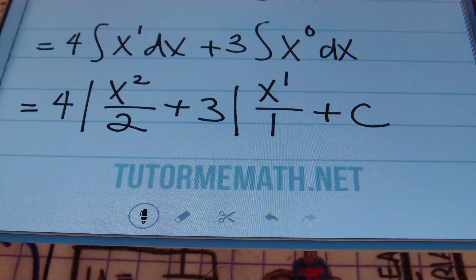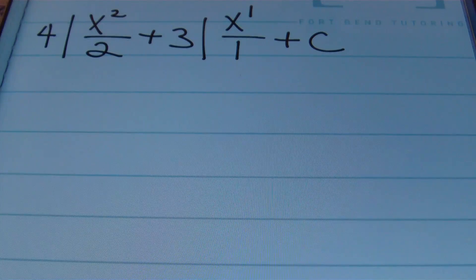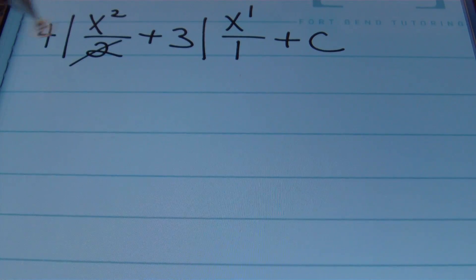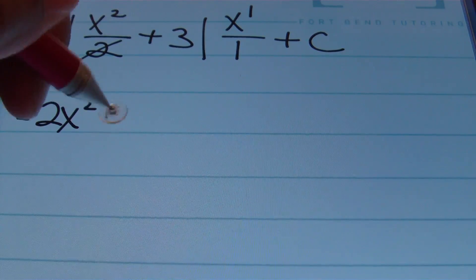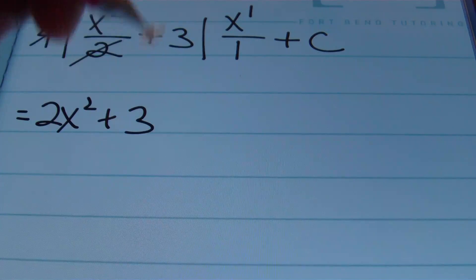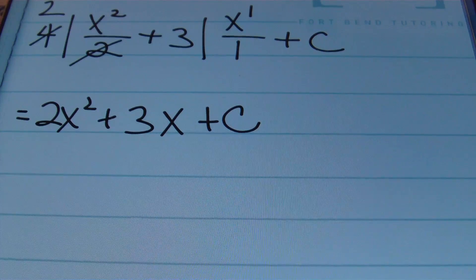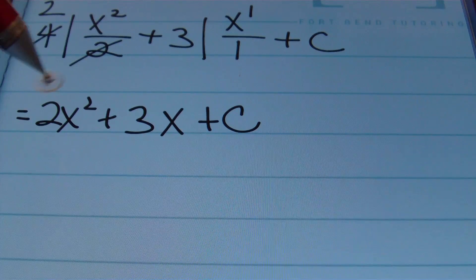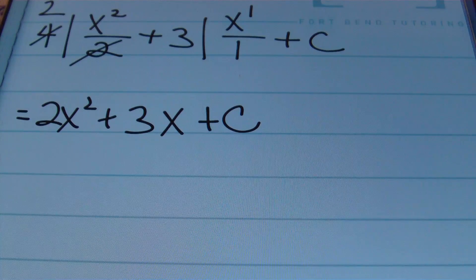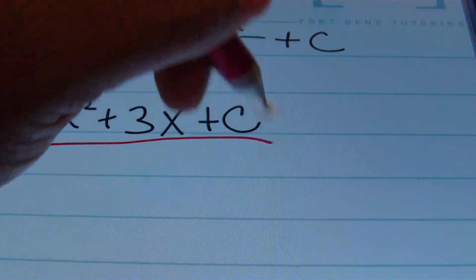Now we simplify. Everything on either side of the multiplication symbol multiplies together, so 2 goes into 4 twice giving 2x squared, and 1 goes into 3 giving 3x, plus C. That's your answer. If you take the derivative of 2x squared plus 3x plus C, you get 4x plus 3. Also note that if given an initial condition — a point from the original function — you can find the exact value of C.